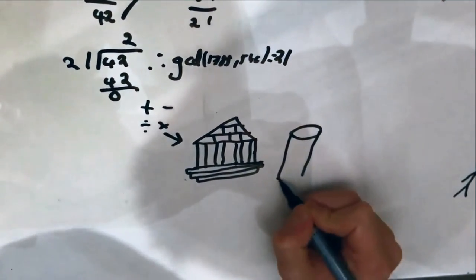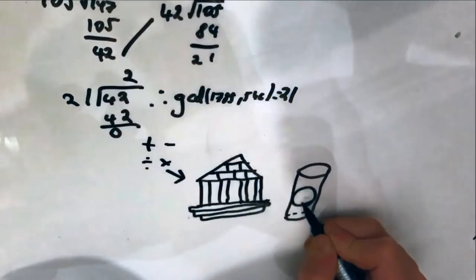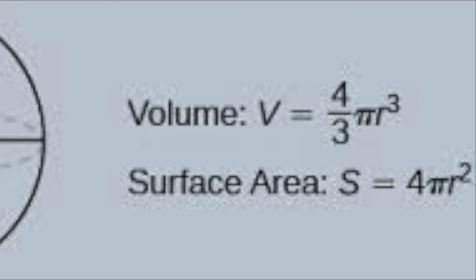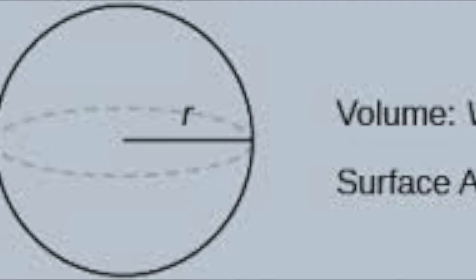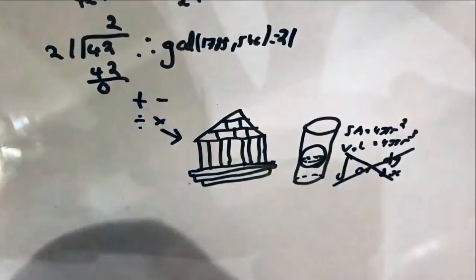He is well known for discovering the relation of a sphere's surface area to its circumscribing cylinder, stating that the surface area of a sphere is four times that of its greatest circle, or more commonly known as 4πr². Discovering this without the use of calculus showed his true intelligence.